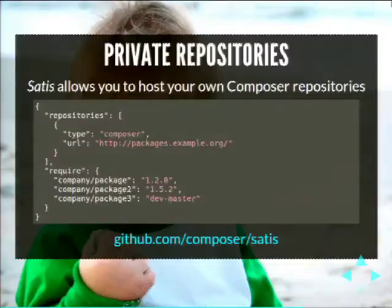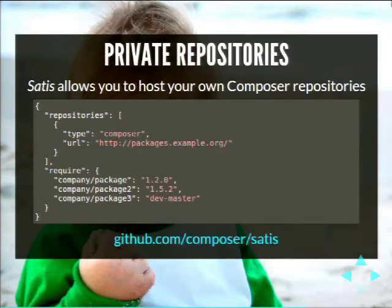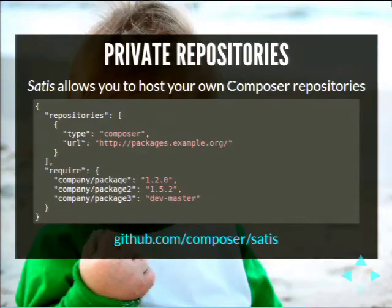You can also host private repositories. If you don't want to publish on a public repository like Packagist, there's a project called Satis which allows you to host your own Composer repository. This is great if you have a certain set of projects you want to host in your own ecosystem. You can add a number of different repositories to your composer.json file. Satis, like Packagist itself, can pull from any number of version control systems.